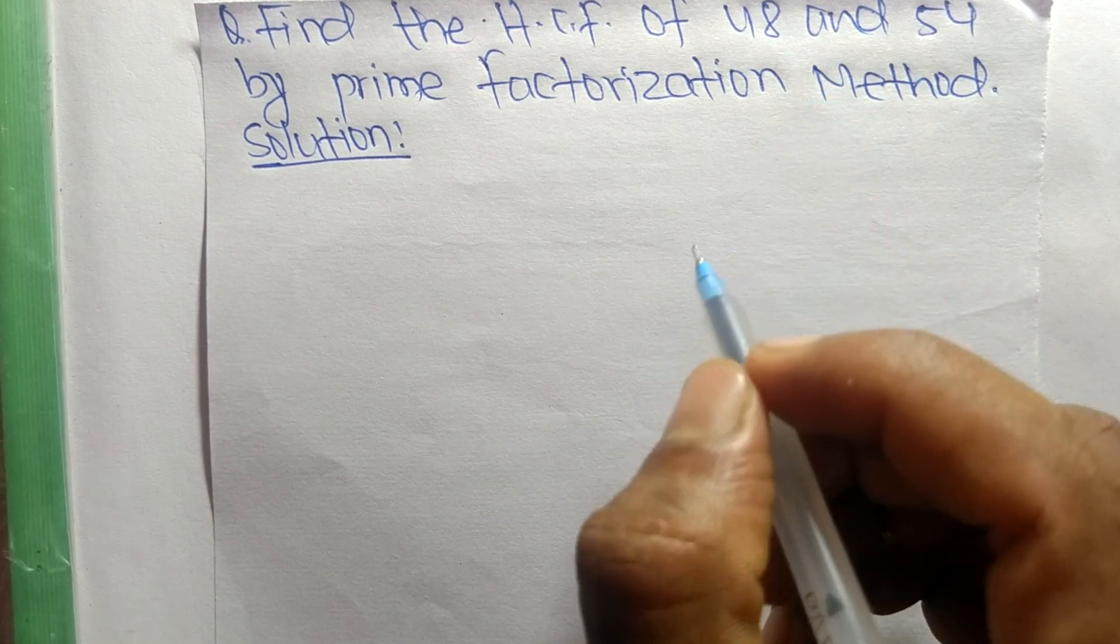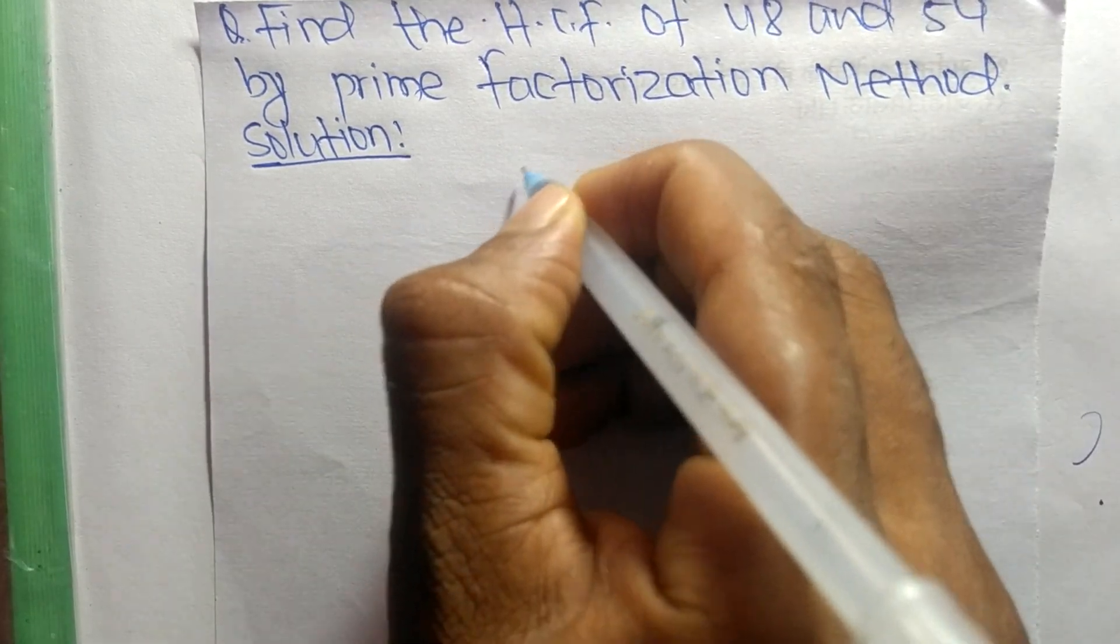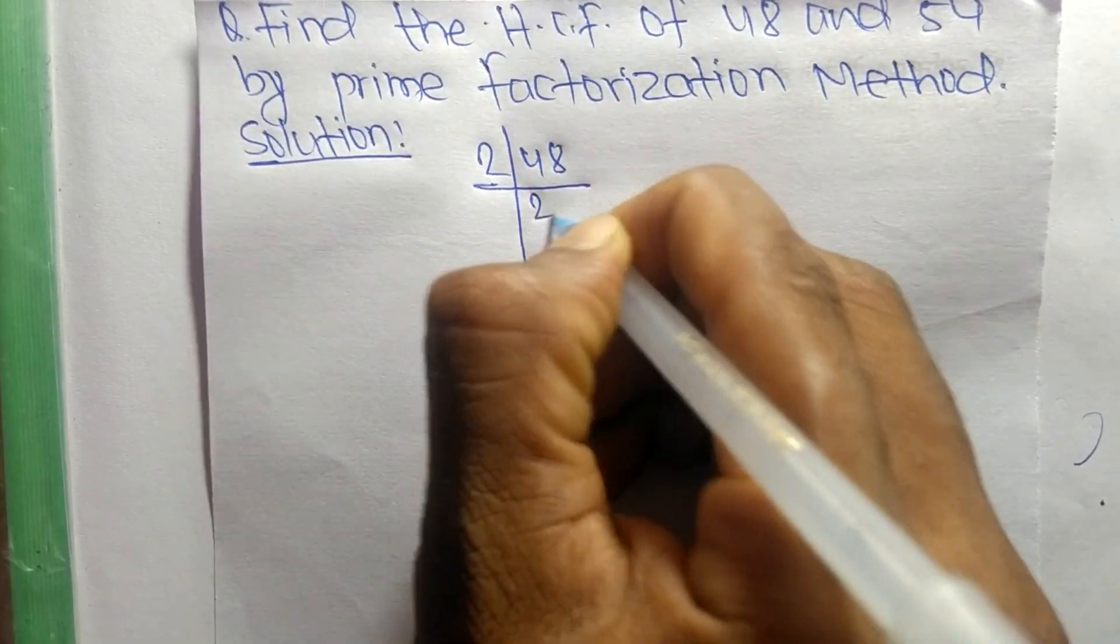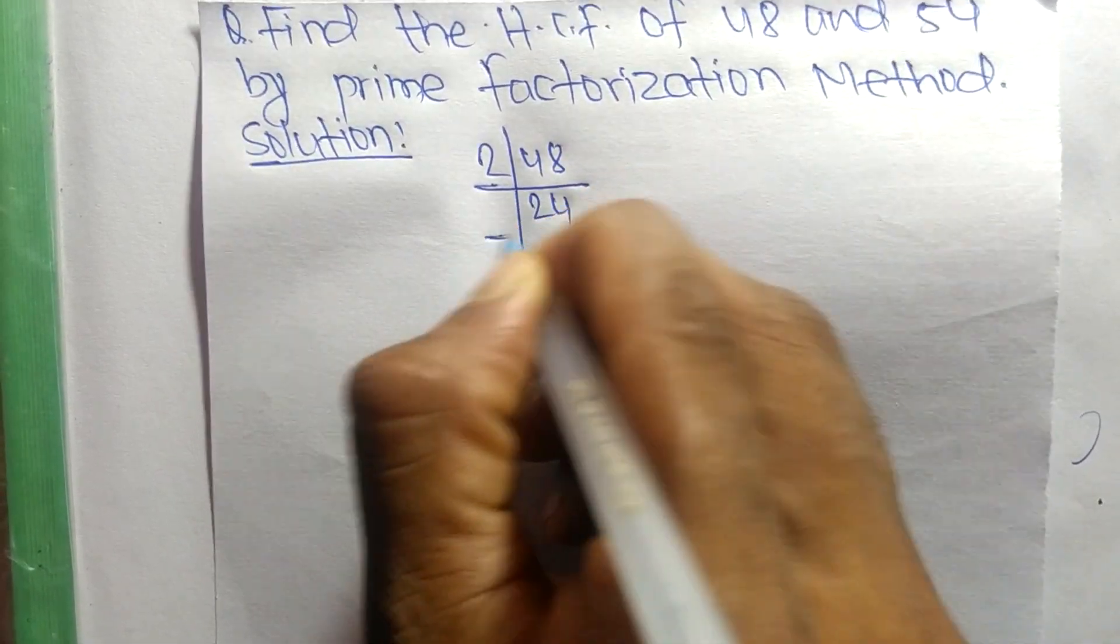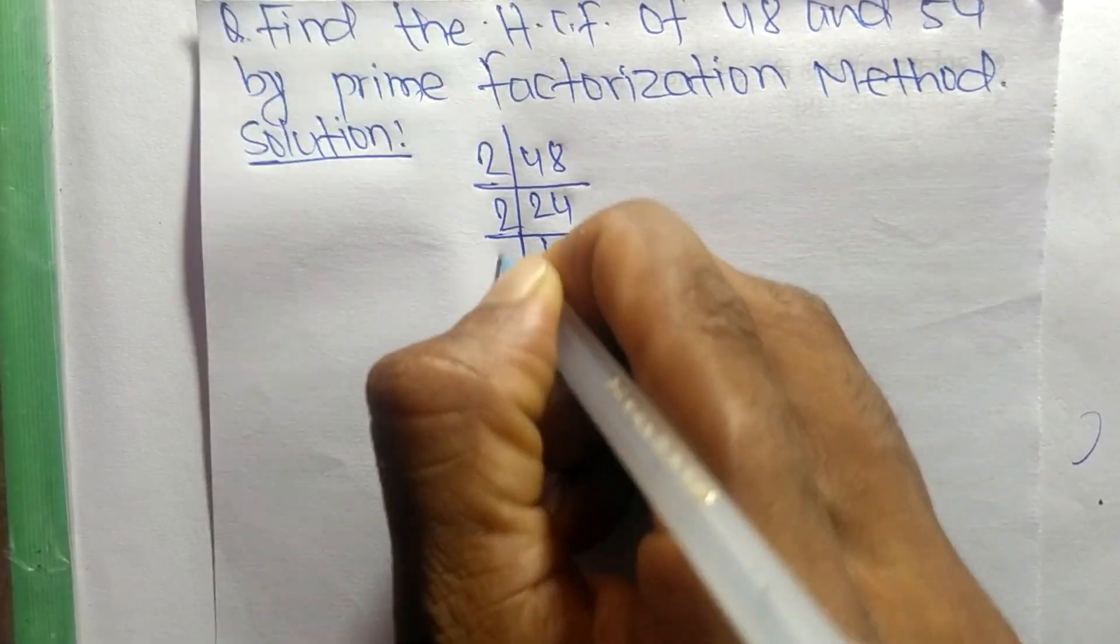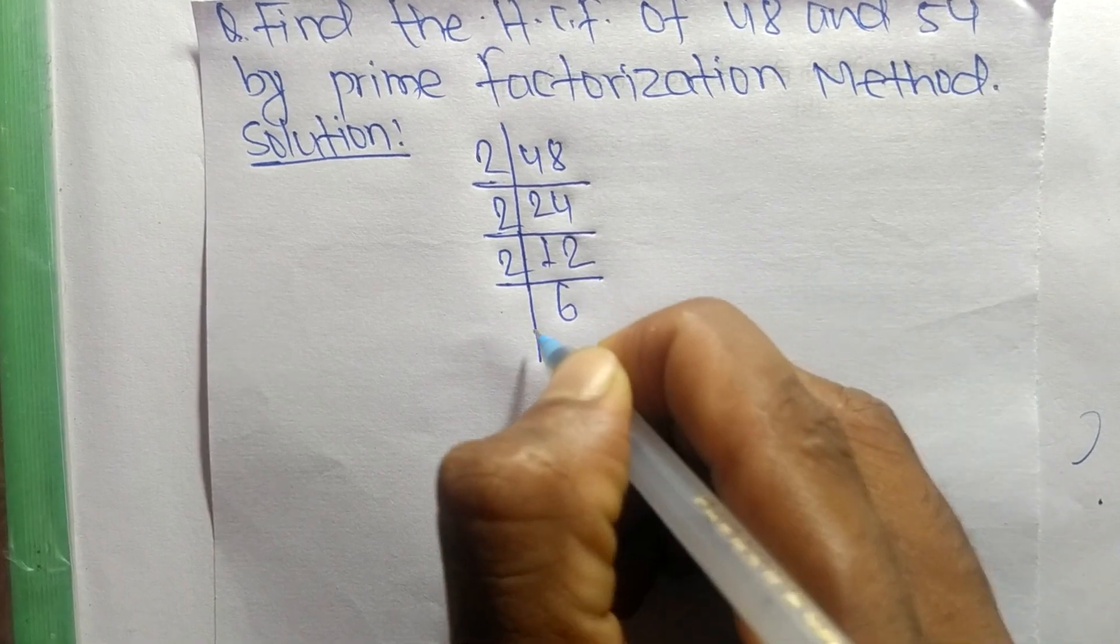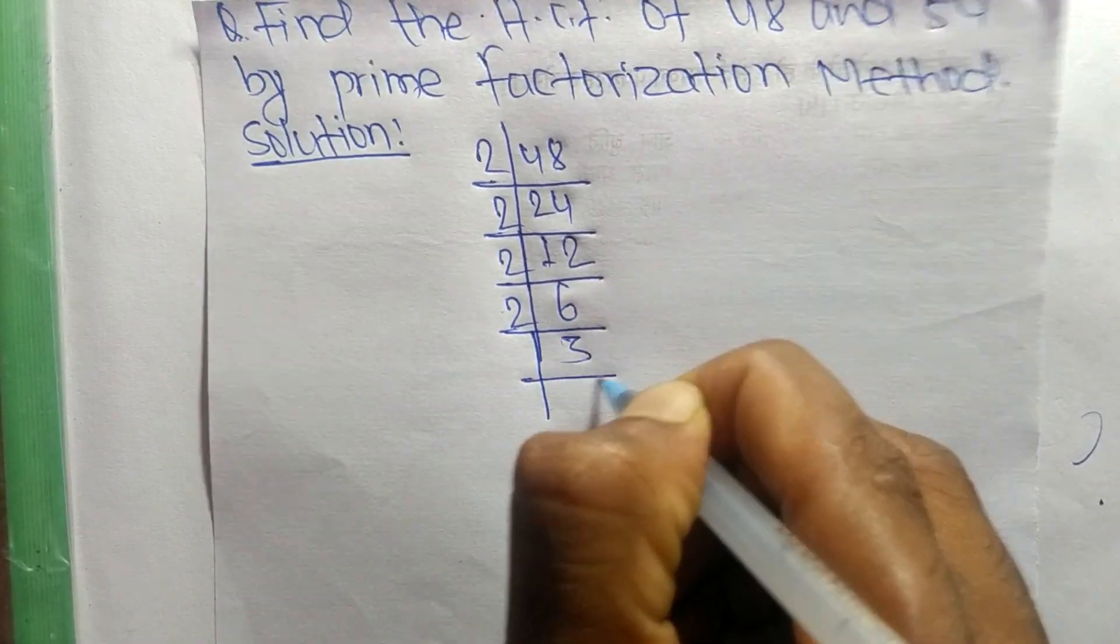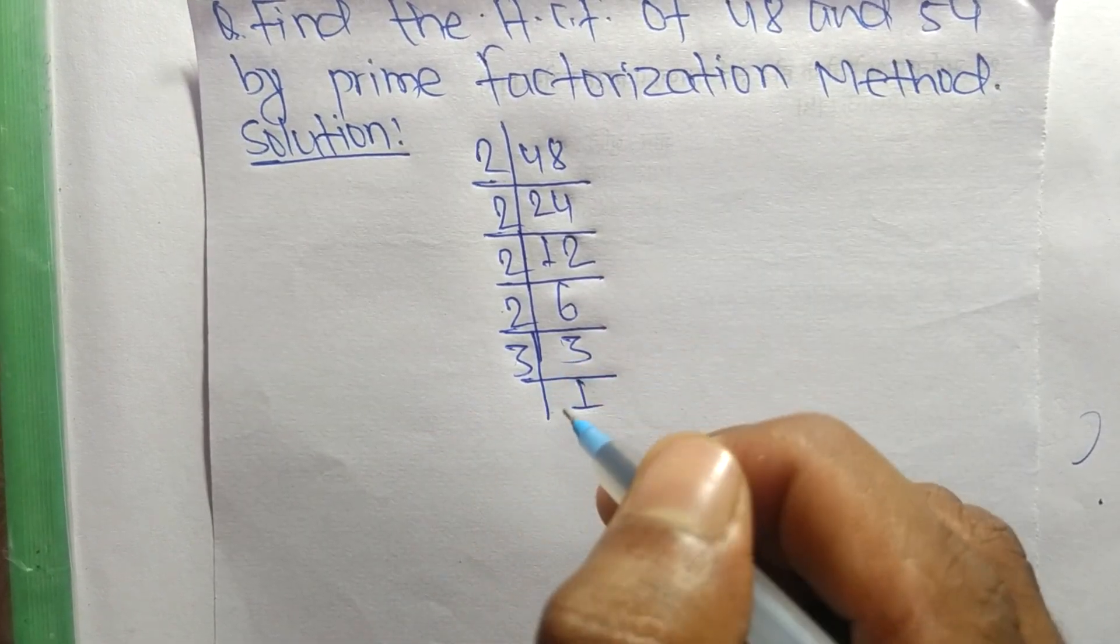First, we find out the prime factors of 48. It is 2 times 24 equals 48, 2 times 12 equals 24, 2 times 6 equals 12, 2 times 3 equals 6, and 3 times 1 equals 3.